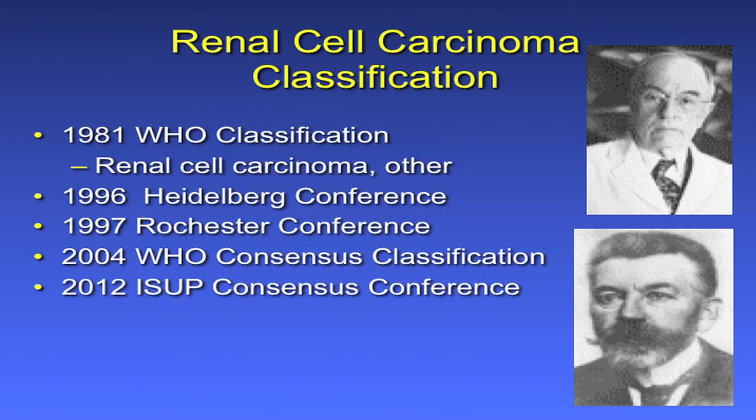I do want to highlight 2012 in Vancouver. There was a consensus conference of urologic pathologists on staging, prognostic features, and grade that appears in this month's American Journal of Surgical Pathology. It was an excellent meeting. A lot of recommendations for changes were made, including grade.